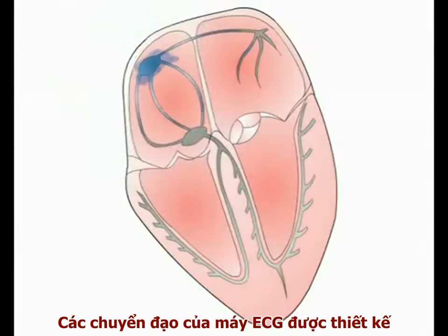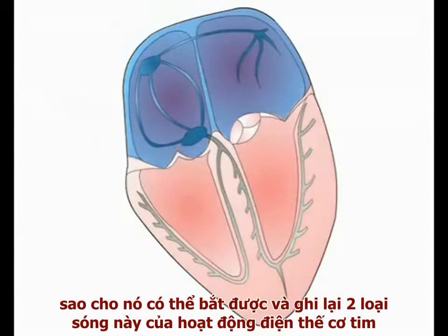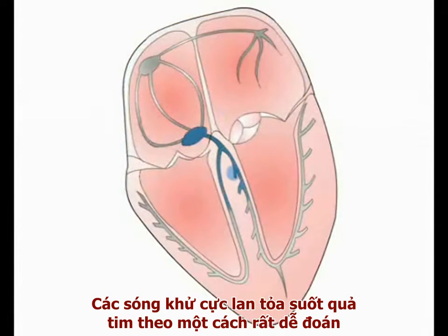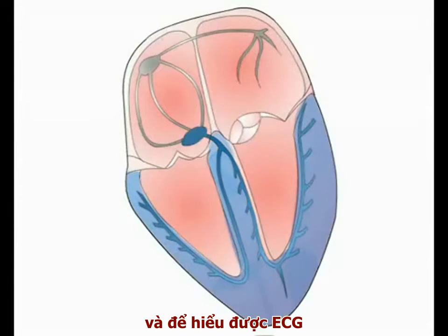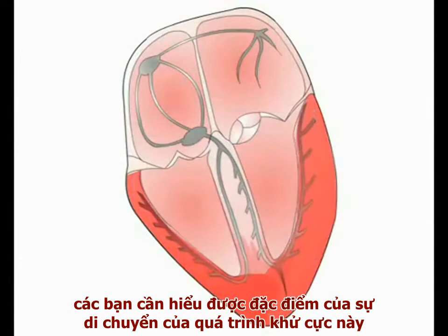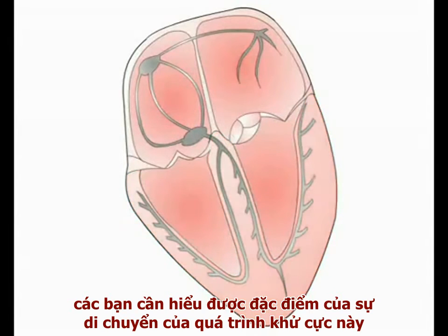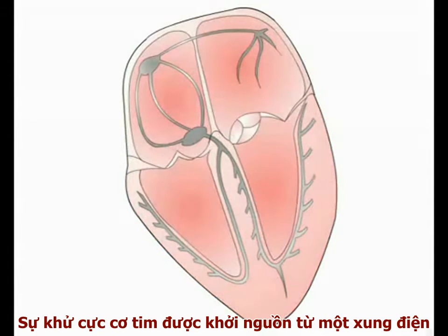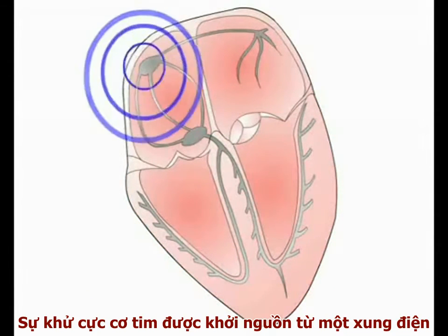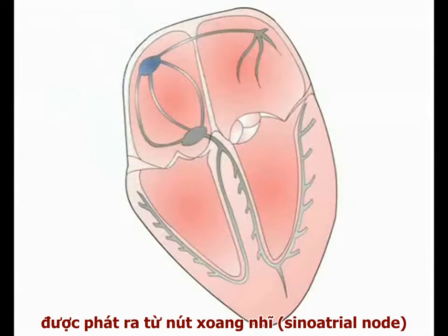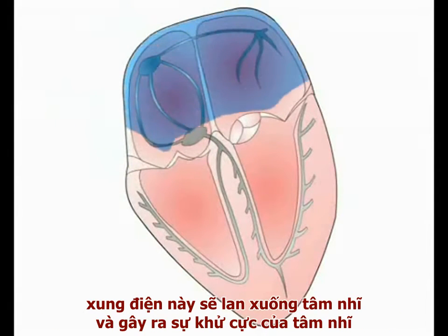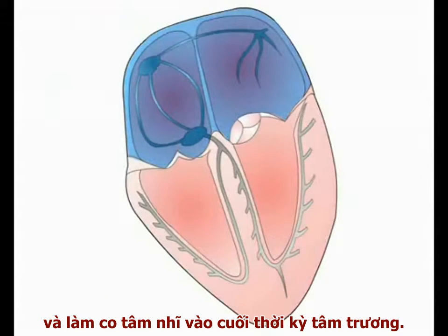The leads of the ECG machine are designed to detect and record these two waves of cardiac electrical activity. The depolarisation wave spreads through the heart in a highly predictable pattern, and to understand the ECG readout, the pattern of spread of cardiac depolarisation needs to be understood. Cardiac depolarisation is triggered by an electrical pulse generated in the sinoatrial node. This electrical pulse then spreads through the atria, triggering their contraction late in diastole.